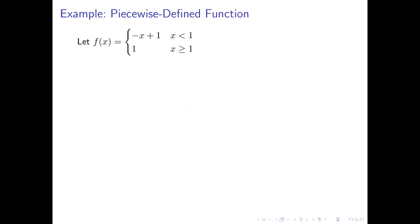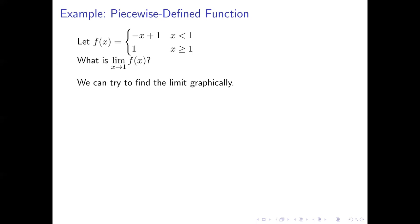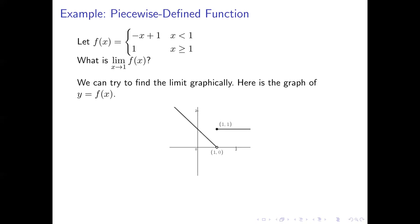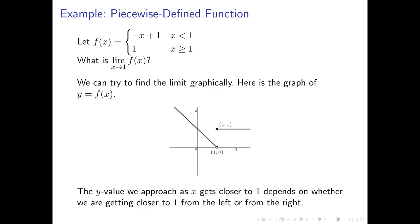Here's an example. Let's start with a piecewise defined function f, where f of x equals negative x plus one when x is less than one, and equals one when x is greater than or equal to one. The question is: what is the limit as x approaches one of f of x? Looking at the graph, to the left of x equals one we have a line like y equals negative x plus one, and at x equals one the graph jumps up to the point (1, 1) and stays at y equals one to the right. As we move closer to x equals one, the y-coordinate we're approaching depends on the direction: from the left we're approaching zero, but from the right we're approaching one.